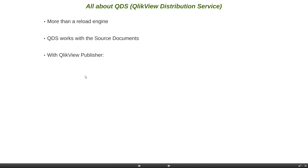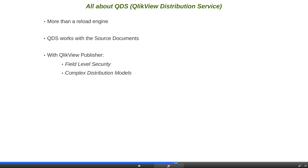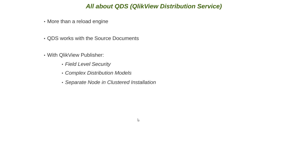Let's look at some of the advantages with QlikView Publisher. QlikView Publisher includes functionality to handle field-level security and access control from central administration software like Active Directory. It is also needed to support complex distribution models for QlikView documents, and in a clustered environment, it allows an additional node for reload distribution or security management in a multi-node deployment.